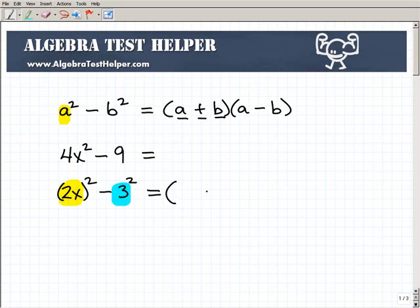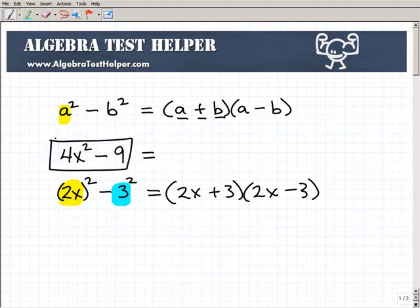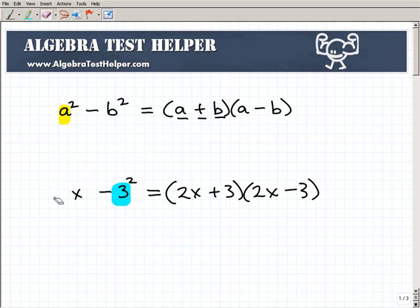So a plus b is going to be 2x plus 3 times 2x minus 3. That's how you want to use the difference of two squares. Not all the situations you're going to be faced with are going to be really easy. I would still consider this a pretty moderate, pretty easy situation to be able to recognize when to use the difference of two squares.